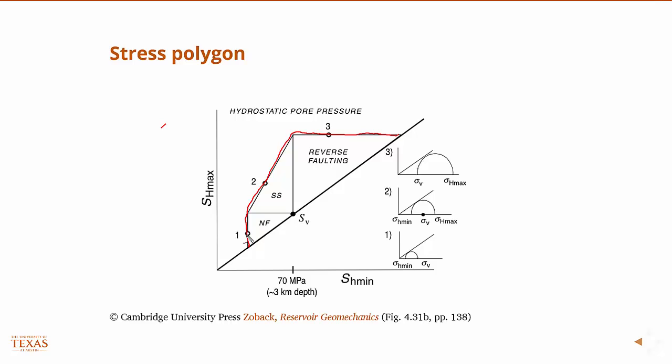And so if you know the faulting regime is reverse faulting, you're always going to be here. If you know it's strike-slip, you're going to be here. If you know it's normal faulting, you're going to be here. And this point right here would be the value where sh-min, sh-max, and sv are all equal to one another.